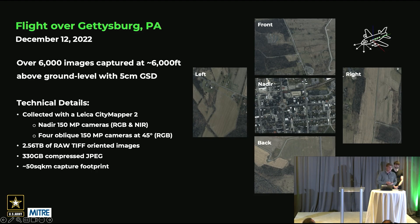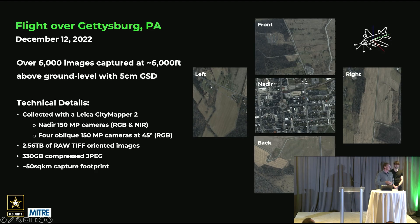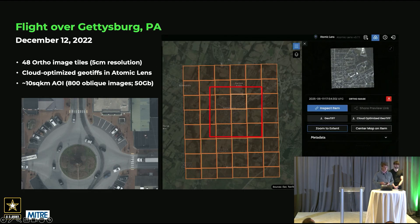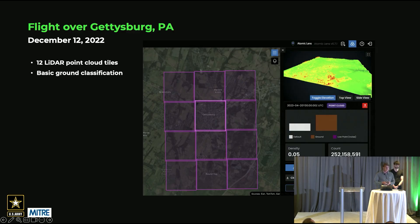Our demo dataset was collected in 2022 by the U.S. Army, and we've been working on scaling out Gaussian splats in partnership with NVIDIA and MITRE. It was collected with a five-camera system — oblique images facing forward, back, nadir, left, and right — collected in a grid pattern over Gettysburg, about 6,000 images in total. We also have ortho images from the City Mapper dataset, which you can see loaded into our front-end application Lens for searching, browsing, quick preview of the cloud-optimized GeoTIFF in the browser, download, or visual inspection and annotation. We also index LiDAR, extracting classification histograms and rendering cloud-optimized point clouds in the browser.